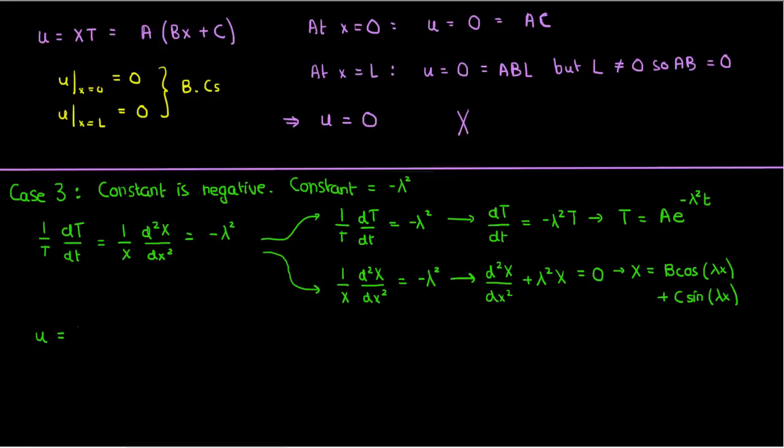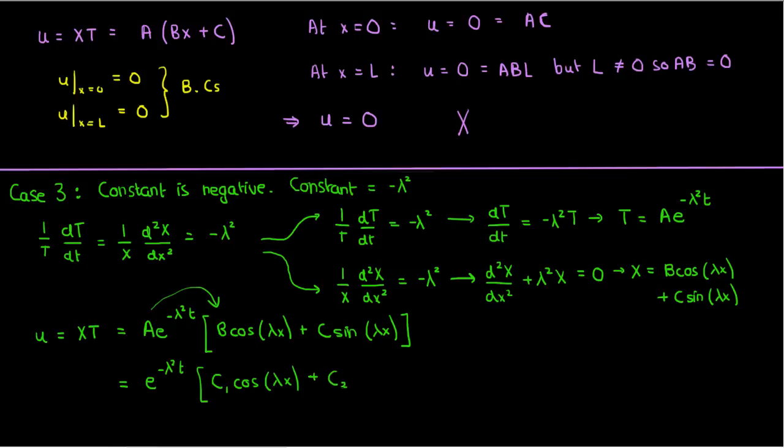Because the solution to our overall PDE is the product of capital T and capital X, we can write u down as a times the exponential of negative lambda squared t times b cosine lambda x plus c sine lambda x. Let's simplify this equation a bit, keeping in mind that a constant times another constant is still a constant. So if we multiply by a inside the square brackets, we'll have a simpler expression in terms of only two constants, which we'll call c1 and c2.